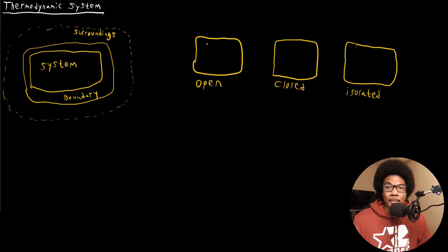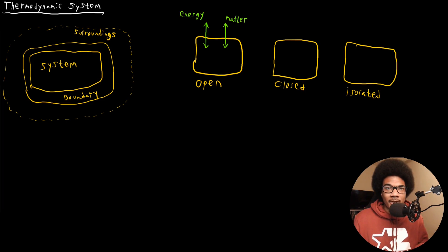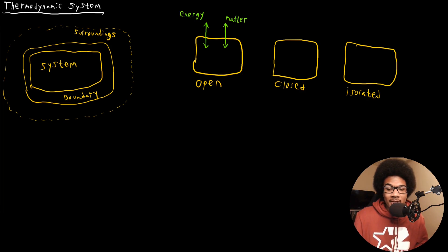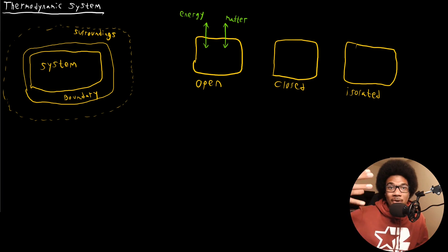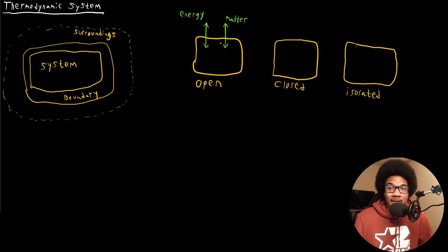In an open system, both energy and matter can be transferred to and from the system. For example, if you're boiling a pot of water on a stove, heat is escaping from the system through the sides. But also, if you're boiling that water, then gaseous water — water vapor — is escaping from that pot as well. So you have energy and matter escaping; that's what we refer to as an open system.